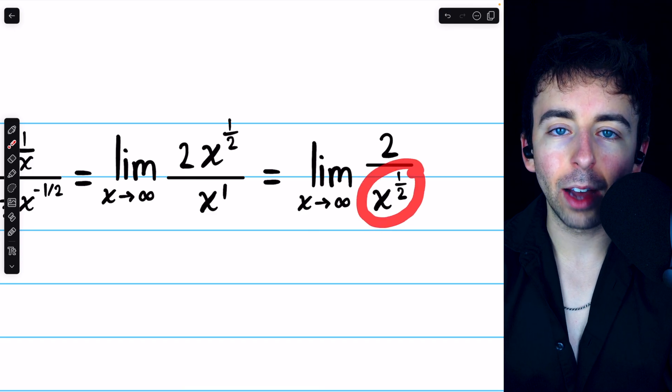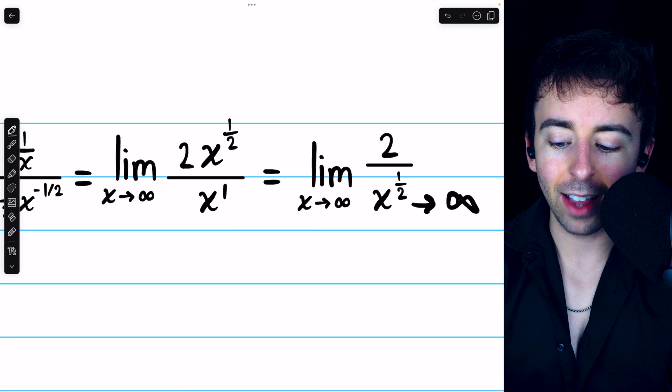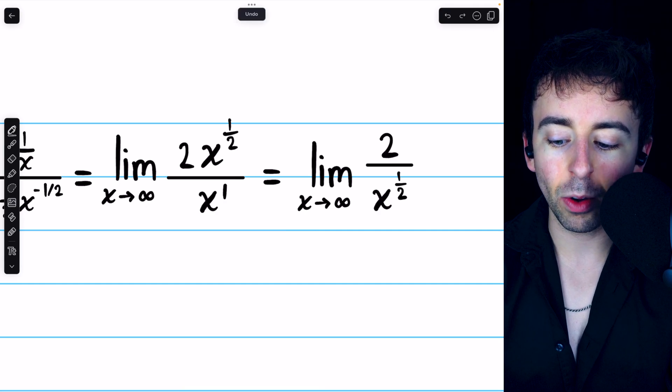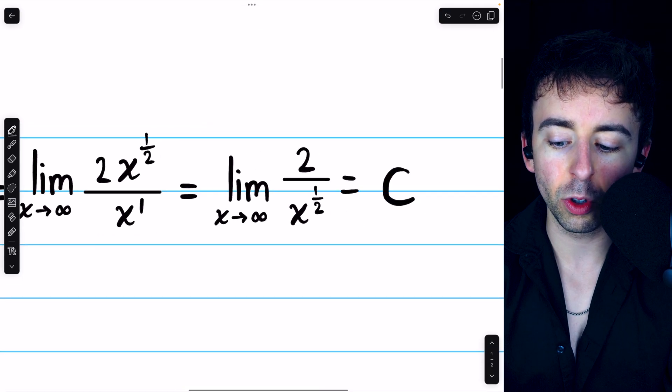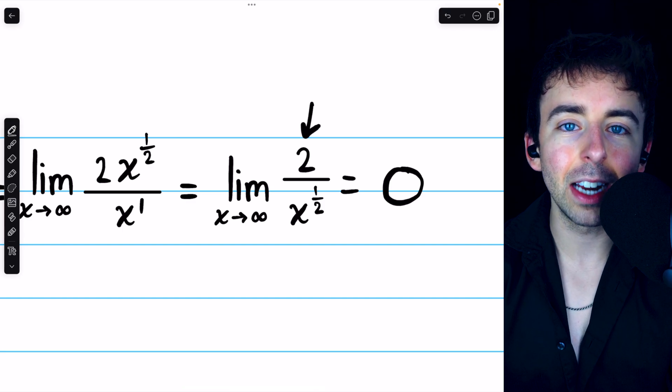x to the 1 half, of course, is the same as the square root of x, and that goes to infinity as x goes to infinity. And so, this limit certainly goes to 0, because the numerator is a fixed finite number, 2.